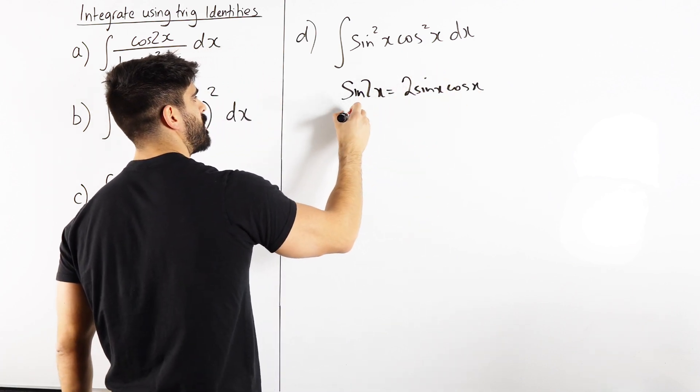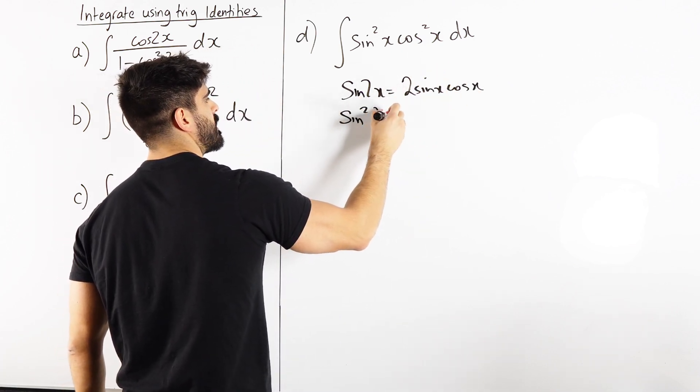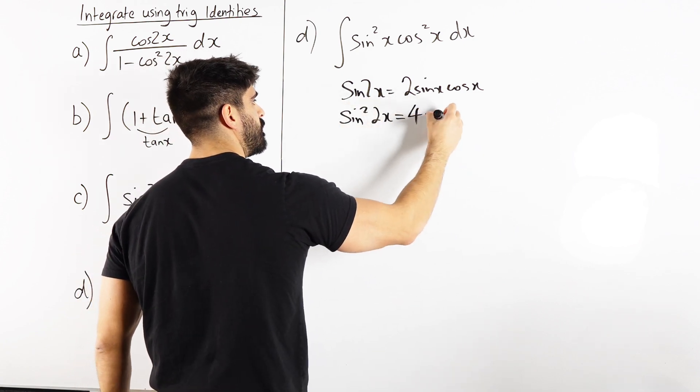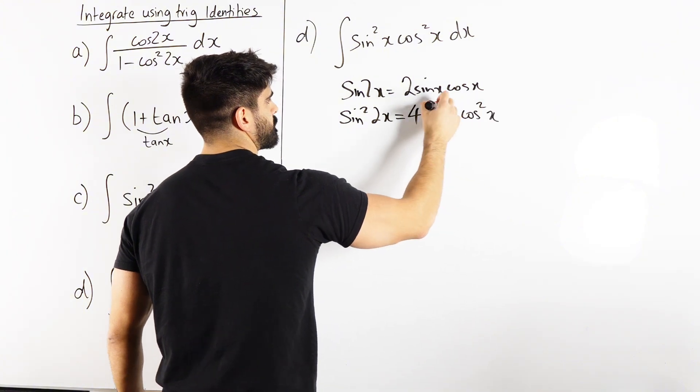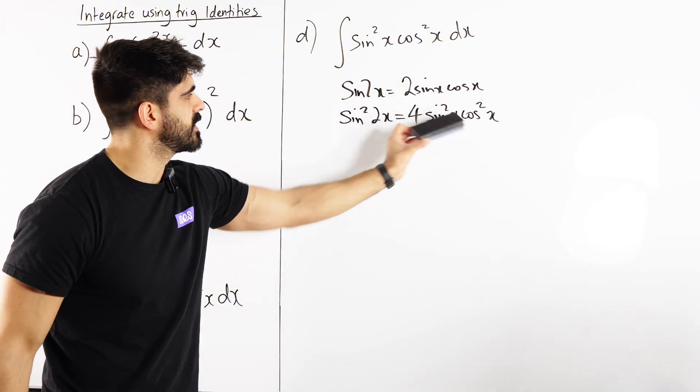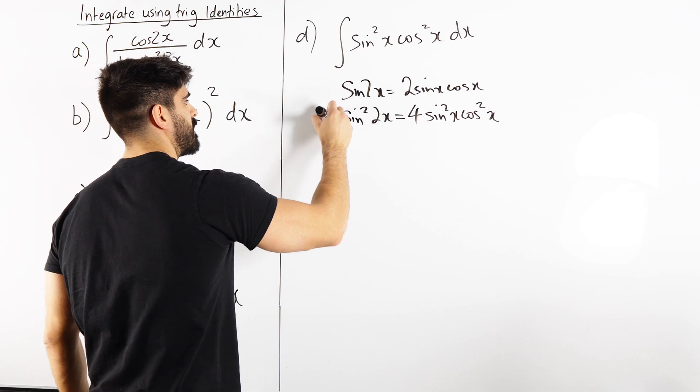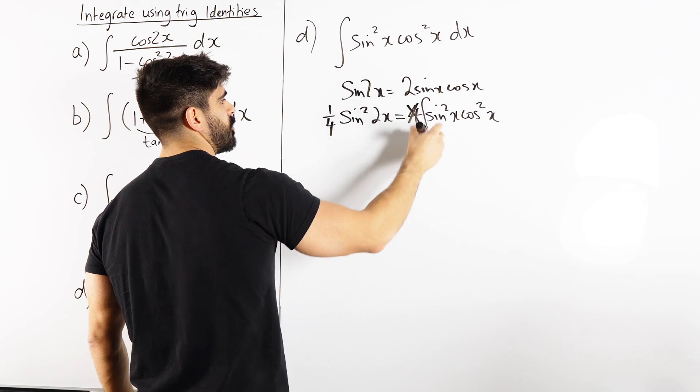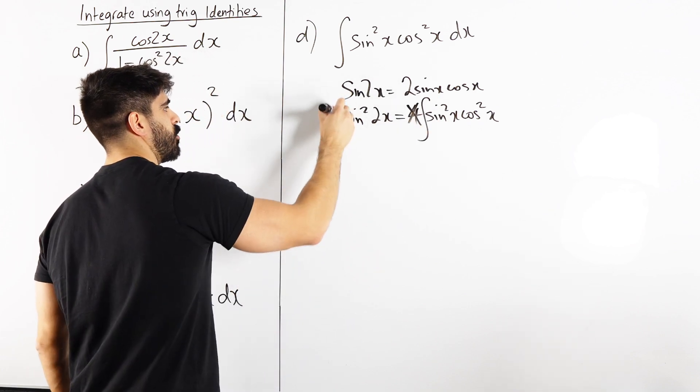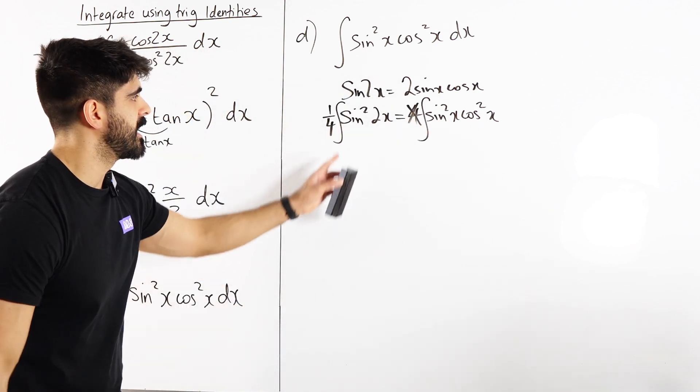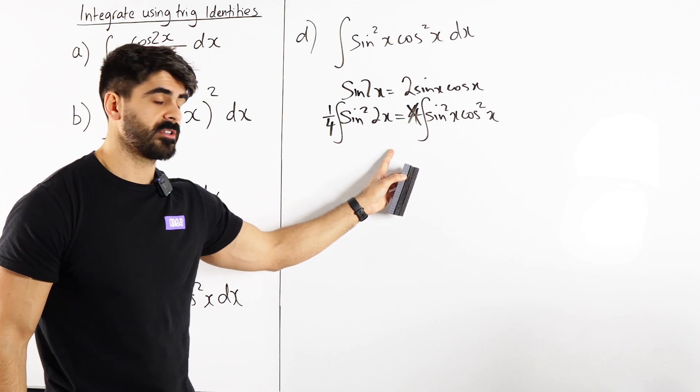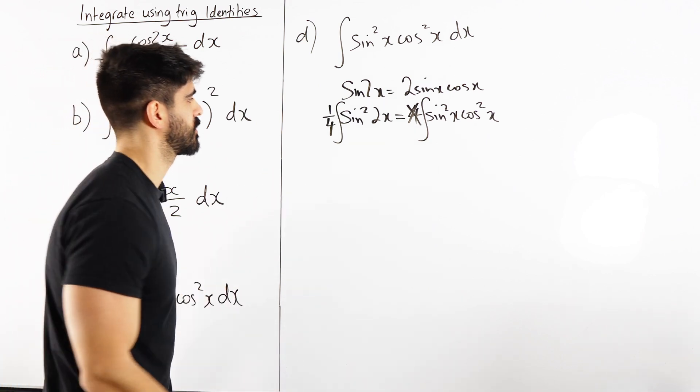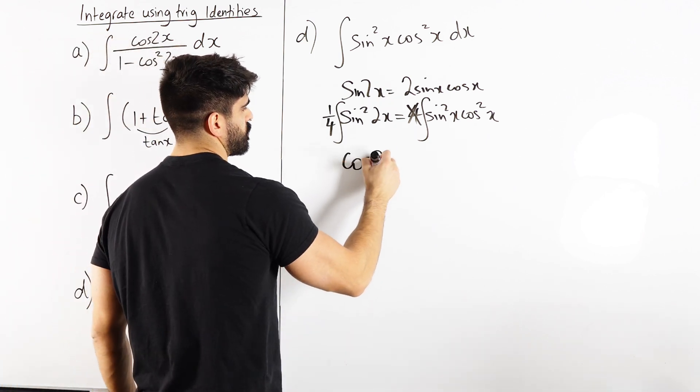Then we square both sides. When we square both sides, we're going to get sine squared 2x is 4. Don't forget to square absolutely everything, sine squared x cos squared x. But we wanted to integrate this, so we're going to divide both sides by 4. We're going to write that as a quarter. Now when we integrate, you guys know what I'm going to do, hopefully. I'm going to keep that quarter on the outside. And now we have to integrate sine squared 2x, which is the exact same as what we did over here. We have to use the double angle ID for cos.